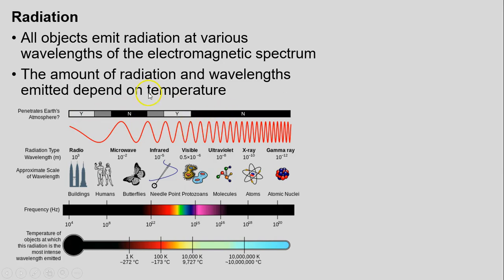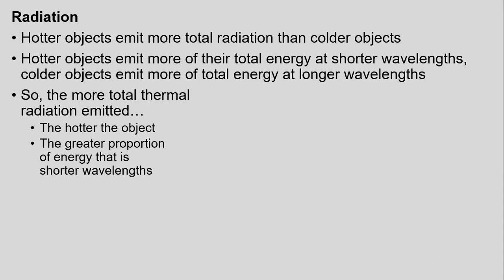One of the main things we want to focus on for radiation is knowing that hotter objects emit more total radiation than colder objects. You can think of it like a fire — if you build a bigger fire, it emits more total energy. Hotter objects emit more of their total energy at shorter wavelengths, while colder objects emit more of that energy at longer wavelengths. So, the more total thermal radiation that is emitted, we know that object is getting hotter, and a greater proportion of its energy is within shorter and shorter wavelengths.